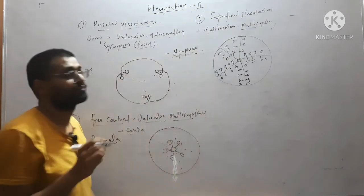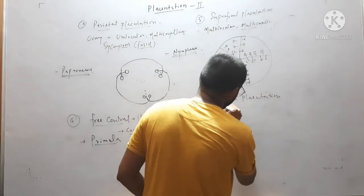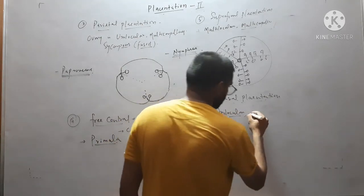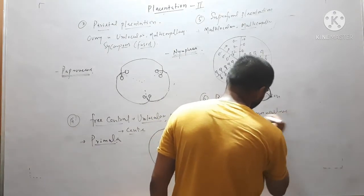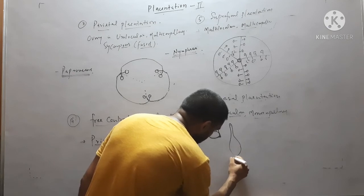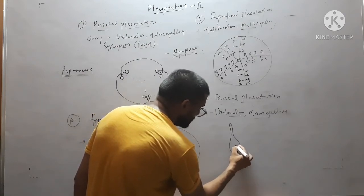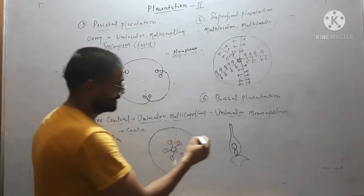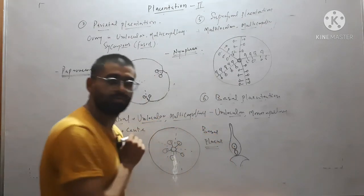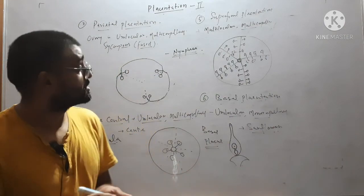The last type is basal placentation. Here the ovary is unilocular and monocarpellary. The placenta arises from the base of the ovary, and on this placenta there is a single ovule. This type is called basal placentation. An example is the sunflower plant, Helianthus. This is all about placentation.